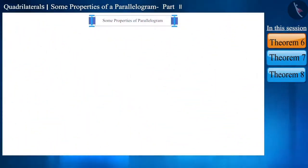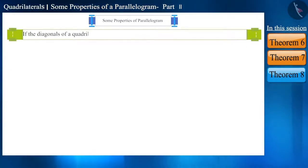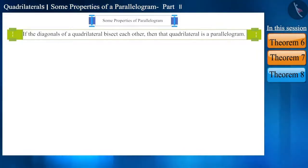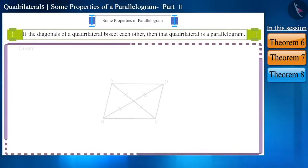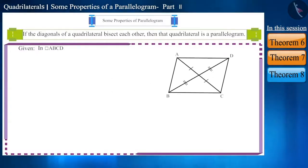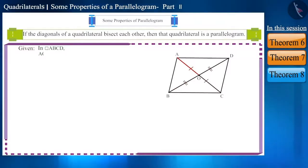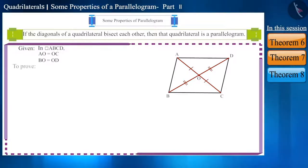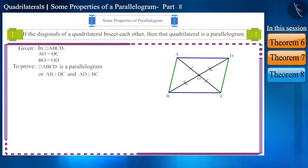Now let's move to the next theorem. If the diagonals of a quadrilateral bisect each other, then that quadrilateral is a parallelogram. This is the converse of the previous theorem. That is, there is a quadrilateral ABCD whose diagonals bisect each other at point O — meaning AO is equal to OC and BO is equal to OD. We have to prove that this quadrilateral is a parallelogram, or that the opposite sides of this quadrilateral are parallel.